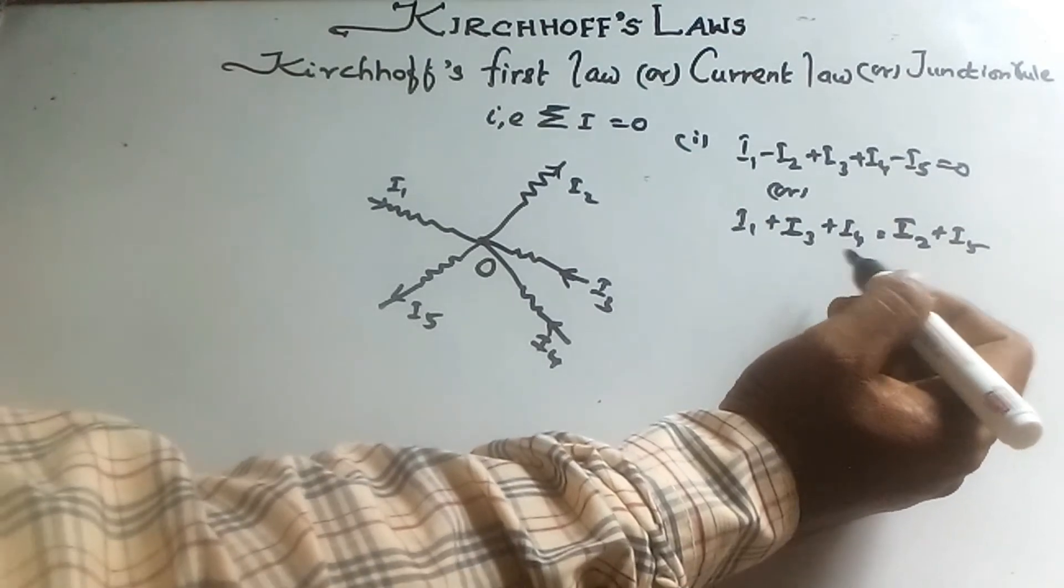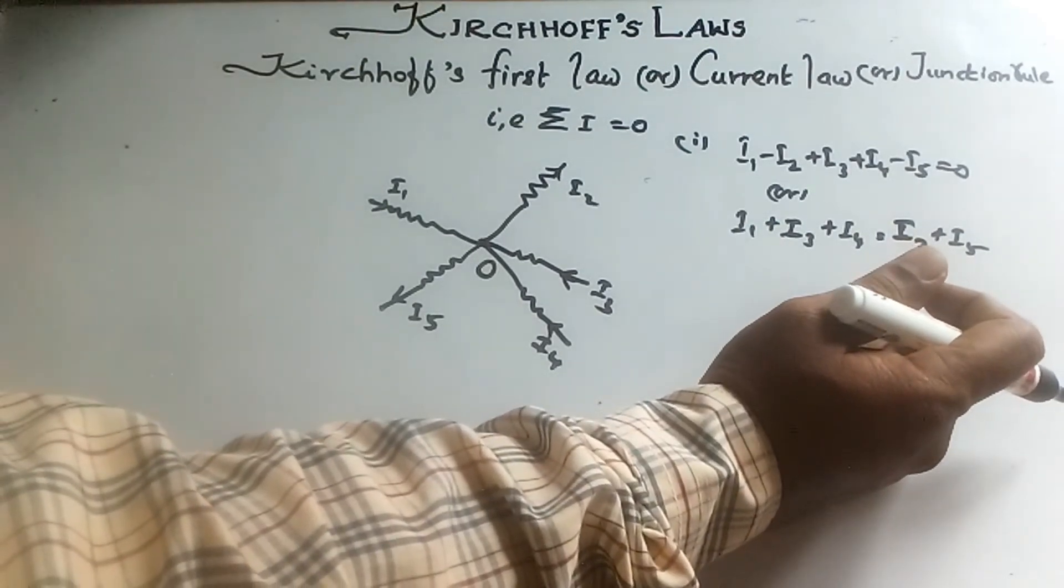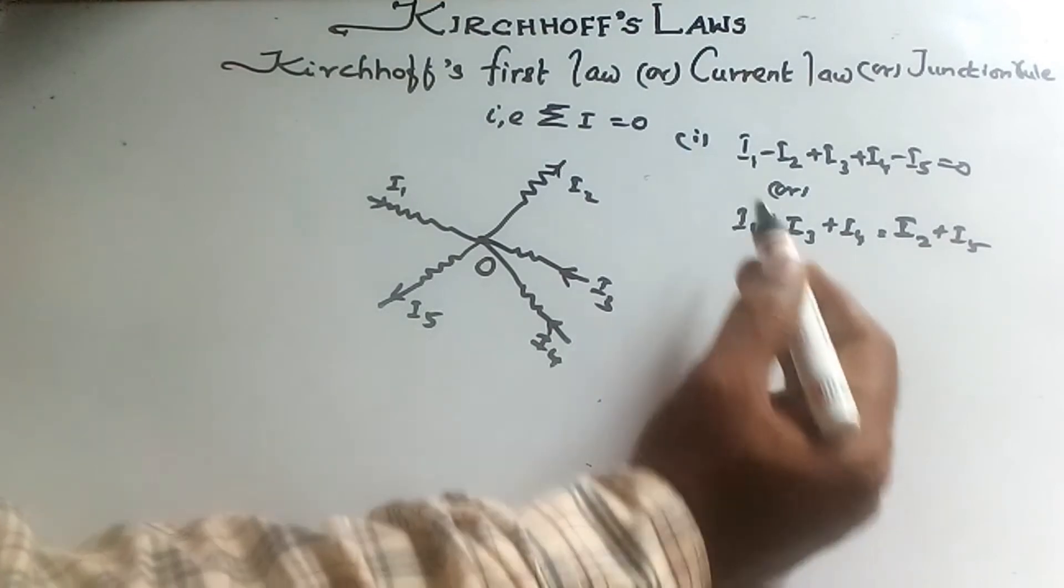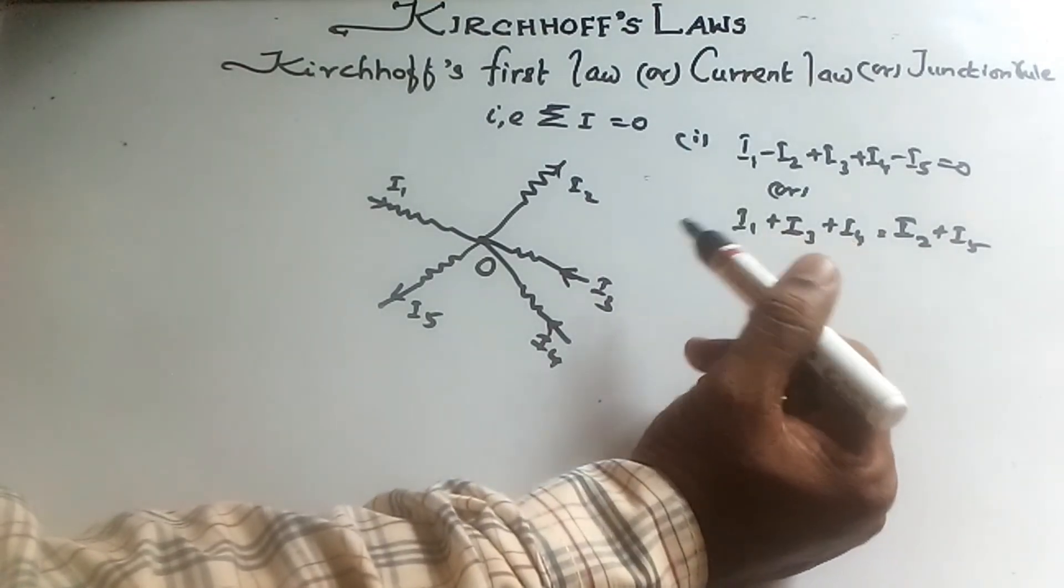By convention, the current directed towards the junction is positive while those directed away from the junction is taken as negative.